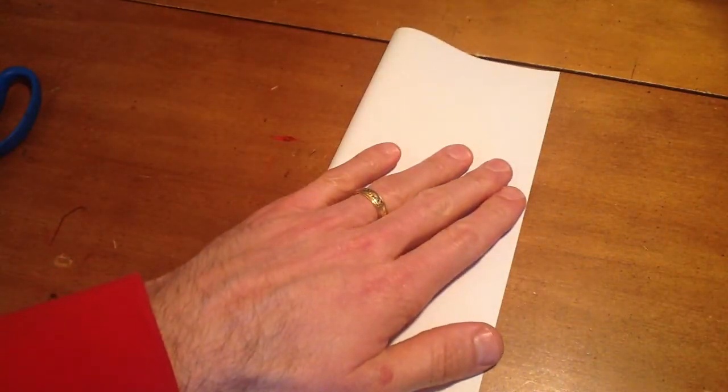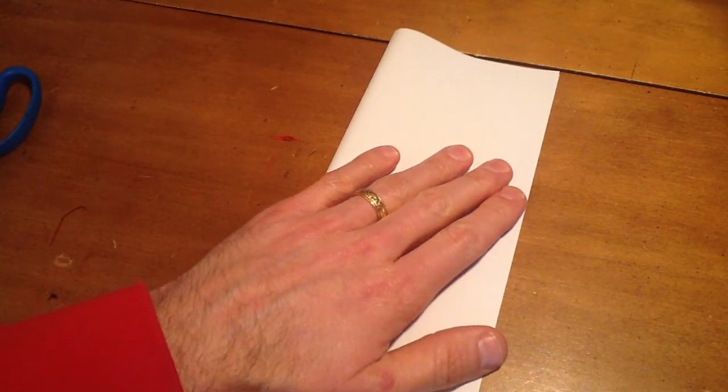First thing you're going to do is fold the piece of paper in half vertically. Some people call it the hot dog fold, some people call it the taco fold. I just say fold it.